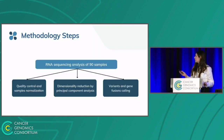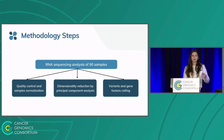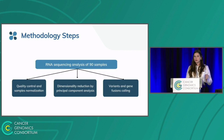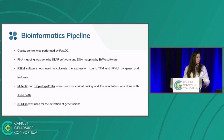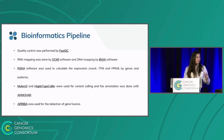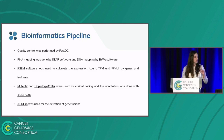For all 90 samples, we performed quality control and sample normalization, dimensionality reduction by principal component analysis, and variant and gene fusion calling on RNA-seq data. The bioinformatics pipeline used FastQC for quality control, STAR for RNA mapping, BWA for DNA mapping, and RSEM to calculate expression in RNA samples as count, TPM, and FPKM. For variant calling, we used MuTect2 and HaplotypeCaller, and for annotation we used ANNOVAR. For gene fusion detection, we used ARRIBA.